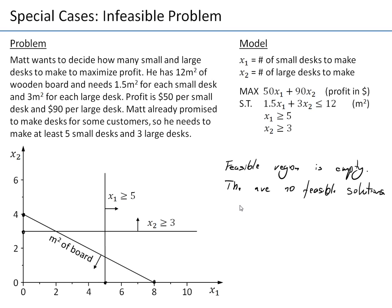This means there are no values of x1 and x2 that we could plug into these three constraints that would satisfy all three of them. We might find points that satisfy the last two constraints, but they will not satisfy the first, and feasible points must satisfy all constraints. If the feasible region is empty, the optimal solution does not exist — because the optimal solution is the best of the feasible points, and if we have no feasible points, there is nothing to choose from.